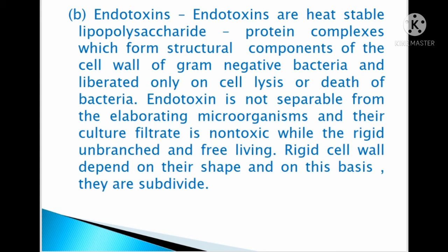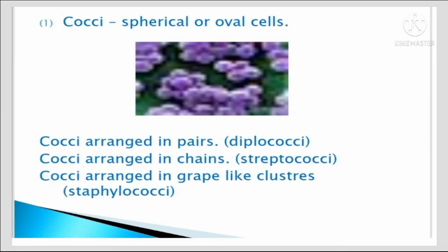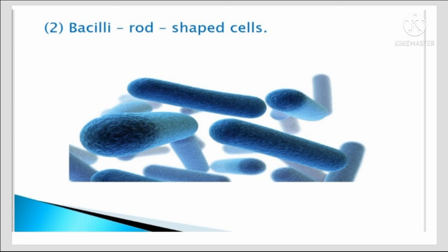Bacteria with a rigid, unbranched, free-living cell wall depend on their shape for classification. On this basis they are subdivided: first, cocci — spherical or oval cells, which can be arranged in pairs, in chains, or in groups like clusters; second, bacilli — rod-shaped cells.